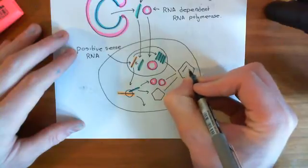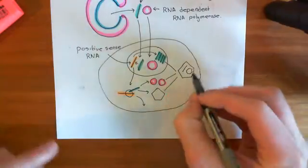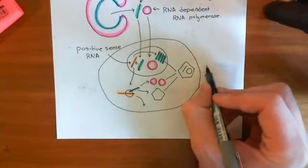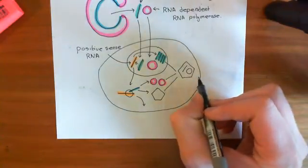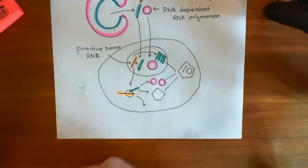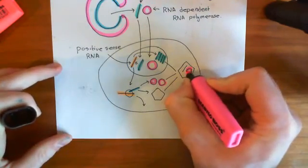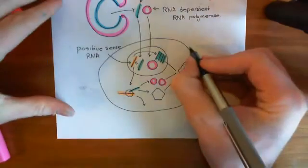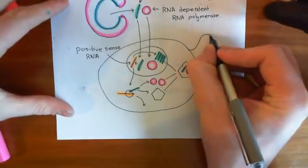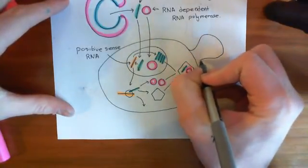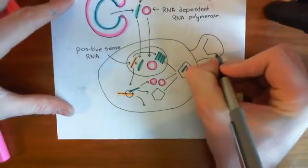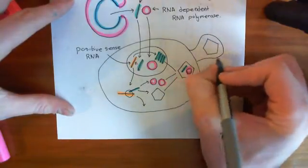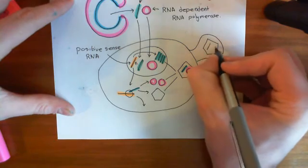How are we actually going to get these nucleocapsids out of the cell? Well, they're going to have to bud off the membrane — they're going to push out this membrane, and what they'll end up doing is taking a coating of the membrane with them. So the nucleocapsid pushes the membrane out in an evagination, and eventually this membrane will pinch off and you'll get a whole new viral envelope being produced from the cell's membrane.